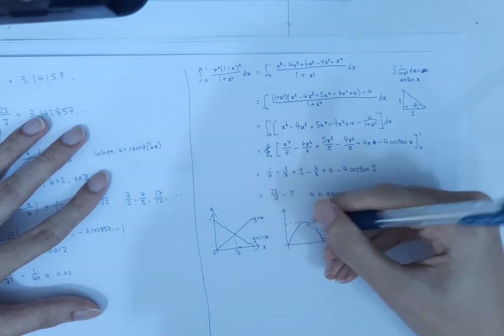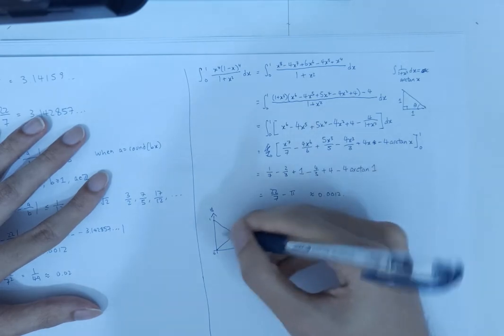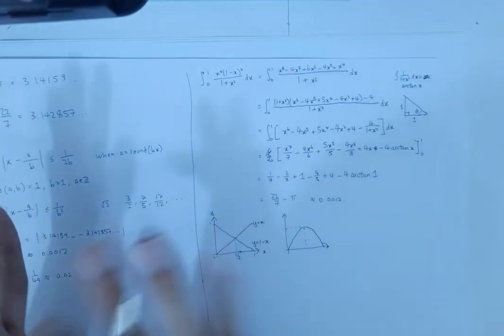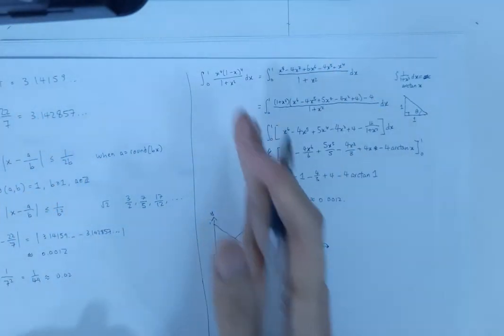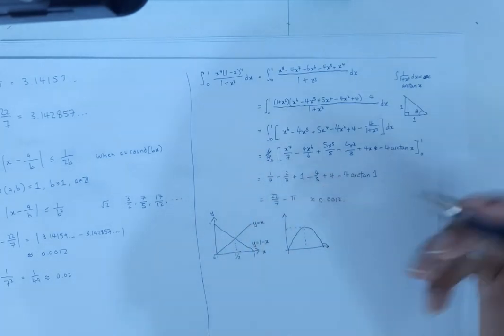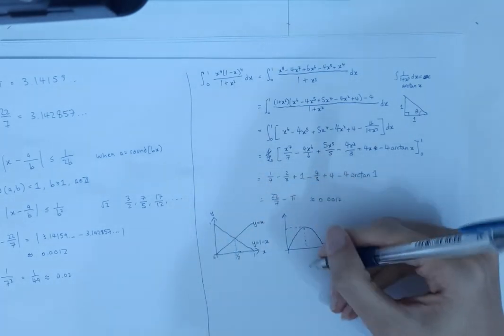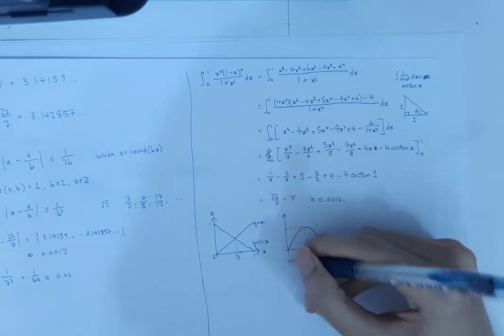And since these two functions are just mirror images of each other along the x equals half axis, the product of these will also be symmetrical along the x equals half axis. So 0, half, 1.